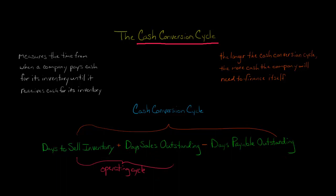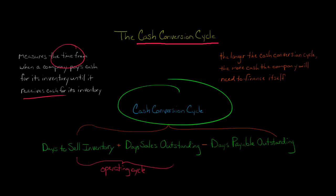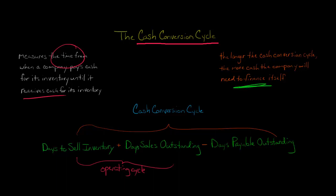Why is this important? Basically, what we're doing here is measuring the amount of time — the difference between when the company pays cash for the inventory and when it actually receives cash for the inventory from its customers. The longer that difference is, the bigger the cash conversion cycle number, the more days the company is going to have to find a way to finance itself, because it's still waiting for cash while it has outstanding receivables.